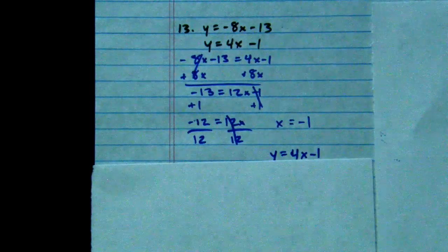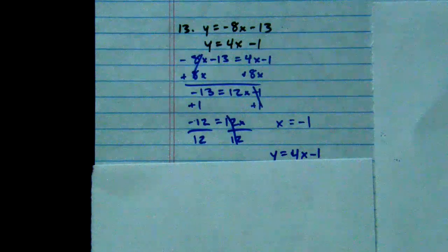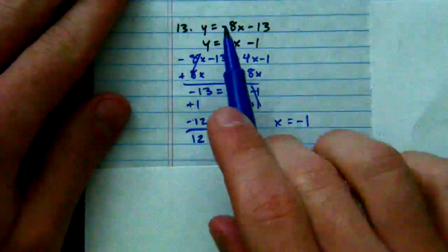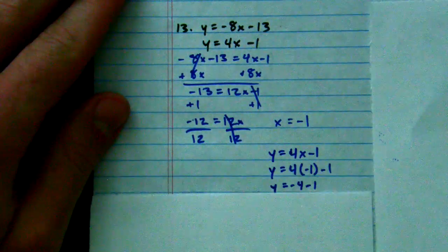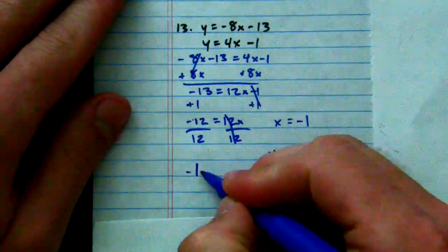So we can take our negative 1, x equals negative 1, and plug it in to one of our original equations. I went ahead and picked 4x minus 1 because there's no negative out front. We plug in negative 1, and we get y equals negative 5.